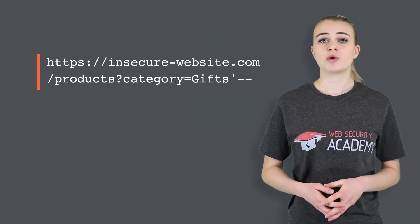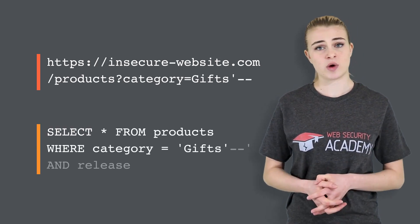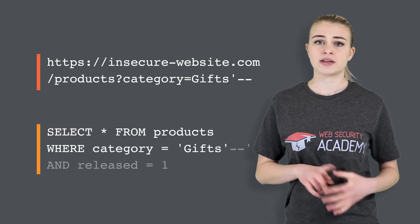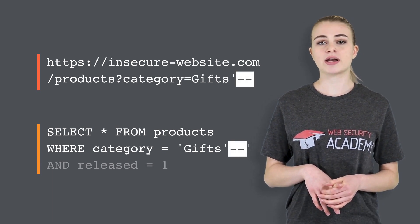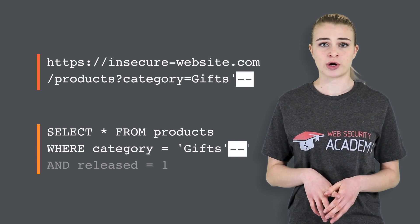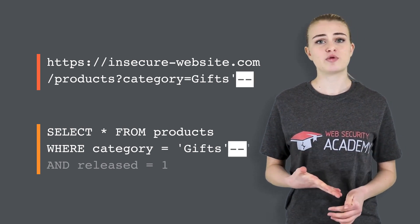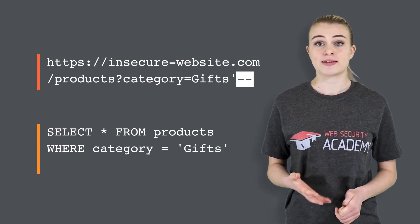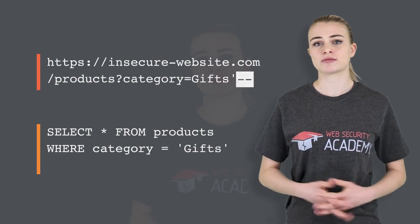So an attacker can construct an attack like this, which results in this SQL query. The key thing here is that the double dash sequence is a comment indicator in SQL, and means that the rest of the query is interpreted as a comment. This effectively removes the remainder of the query, meaning that all products are displayed, including unreleased products.